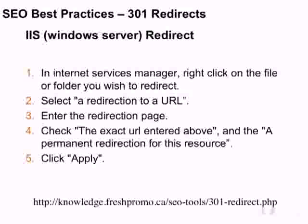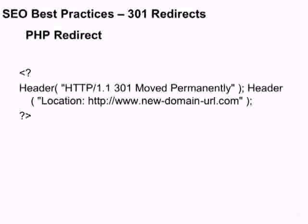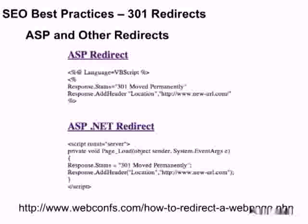Within Windows in Internet Services Manager, you right-click on the file you wish to redirect, select a redirection URL, make sure that the exact URL entered is a permanent redirection for this resource, click Apply, and select Permanent Redirect — because the default is a 302 within IIS. A PHP example would be a header-level 301 redirect — this would go in your PHP code rather than on the web server, at the file or page level rather than the domain or server level. Examples for ASP and other redirects are available and nuanced based on the platform, with examples for many different platforms available at the web comps URL listed.